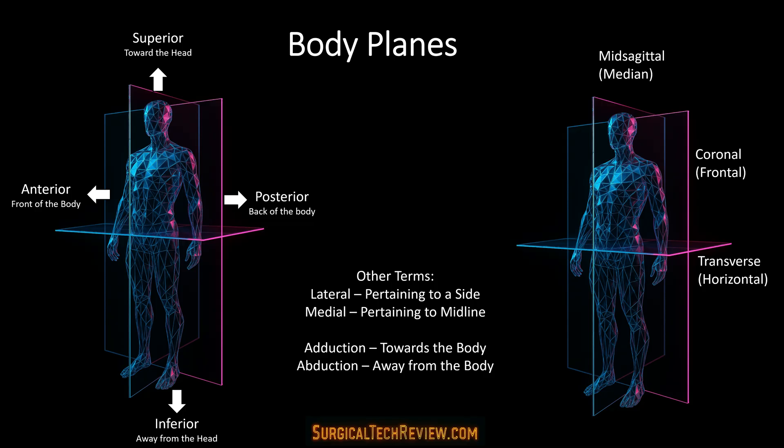Directional terminology helps us describe locations in the body. Superior means toward the head; inferior means away from the head. Anterior refers to the front of the body, while posterior refers to the back. We also describe movement: adduction brings a limb toward the midline, while abduction takes it away.